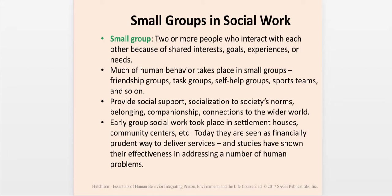Early group social work took place in settlement houses and community centers. Group work fell out of favor around the time of the progressive era. Individual casework became more popular because in the late 1800s and early 1900s, socialism was becoming increasingly influential around the world. In national American elections, socialist candidates were doing quite well, and this was seen as a challenge to the capitalists in charge of the economic environment.